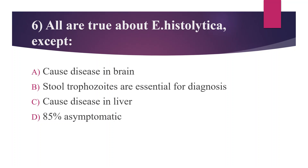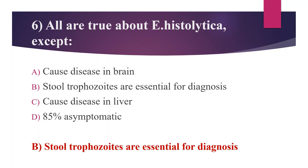Sixth question: All are true about Entamoeba histolytica except — option A. Causes disease in brain, option B. Stool trophozoites are essential for diagnosis, option C. Causes disease in liver, option D. 85% asymptomatic. The answer is option B. The diagnostic stage of Entamoeba histolytica is quadrinucleated cysts. Trophozoites are seen in stool only during active acute infection but soon disappear, so option B is incorrect.